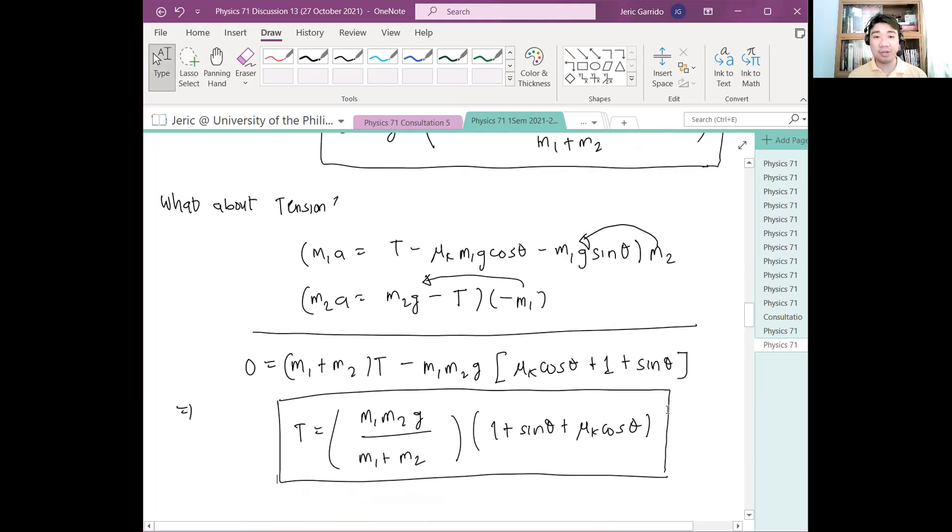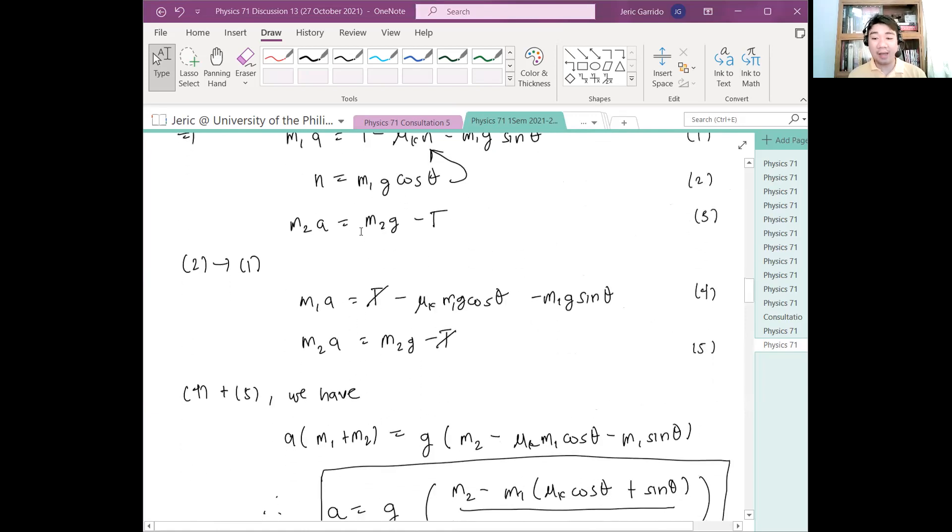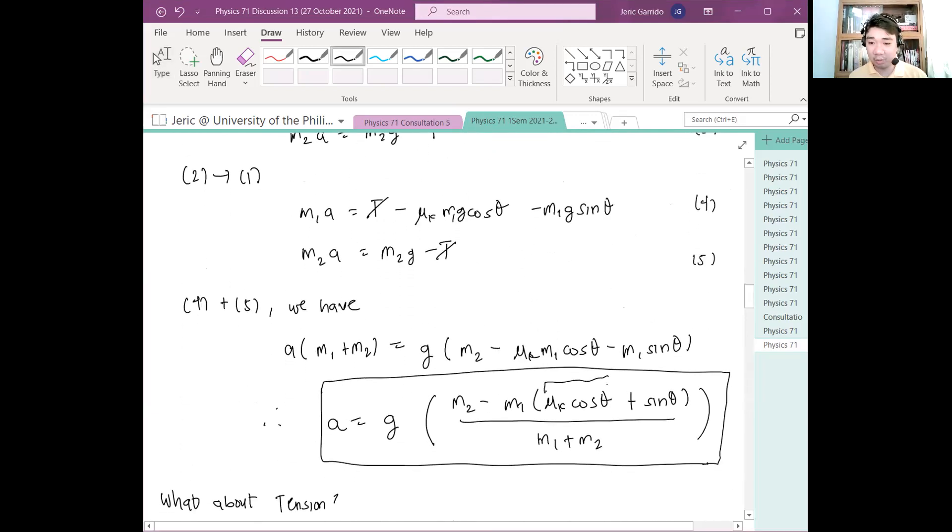Nakuha? Questions? So are there any questions for this particular problem? May tanong ba? Okay kung medyo lost dun sa paano nangyari yung mga assumptions please go back to lecture 12 part 5 and dun yung mas detailed discussion on the particular topic but the point here is if you have frictional force it will definitely contribute, you have mu k cosine theta here which is due to the frictional force exerted on the object and that cosine theta is dependent on the normal force. Okay may tanong ba ito? Questions? Are there any questions?